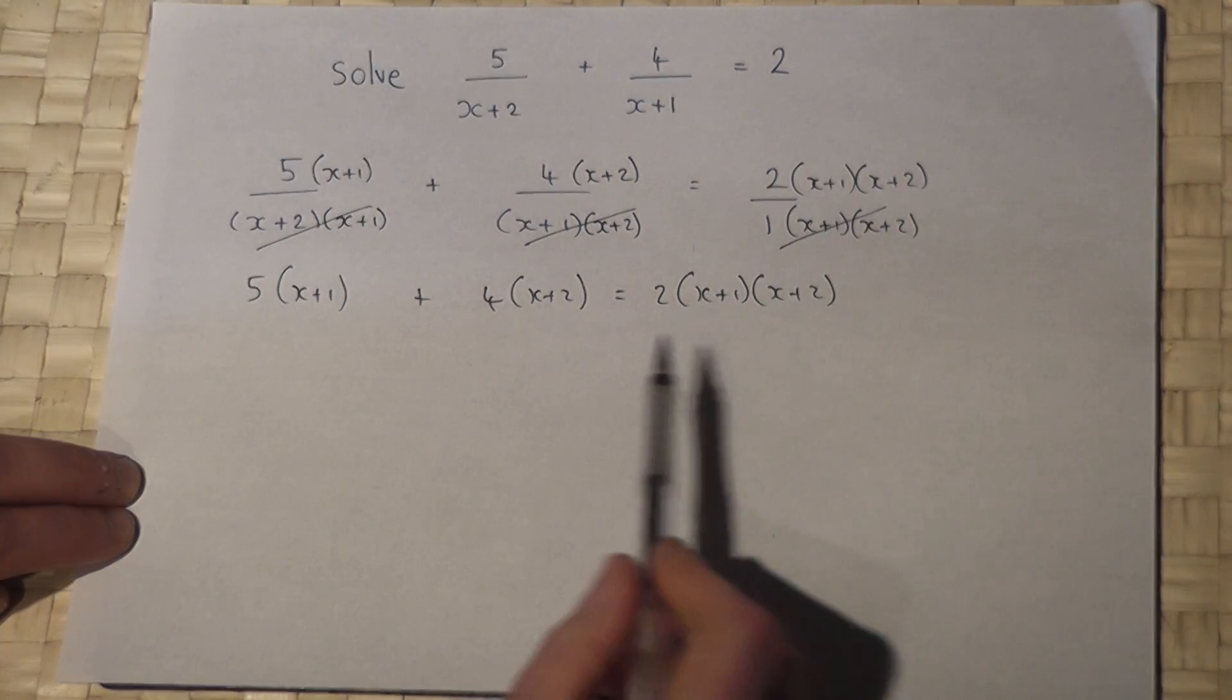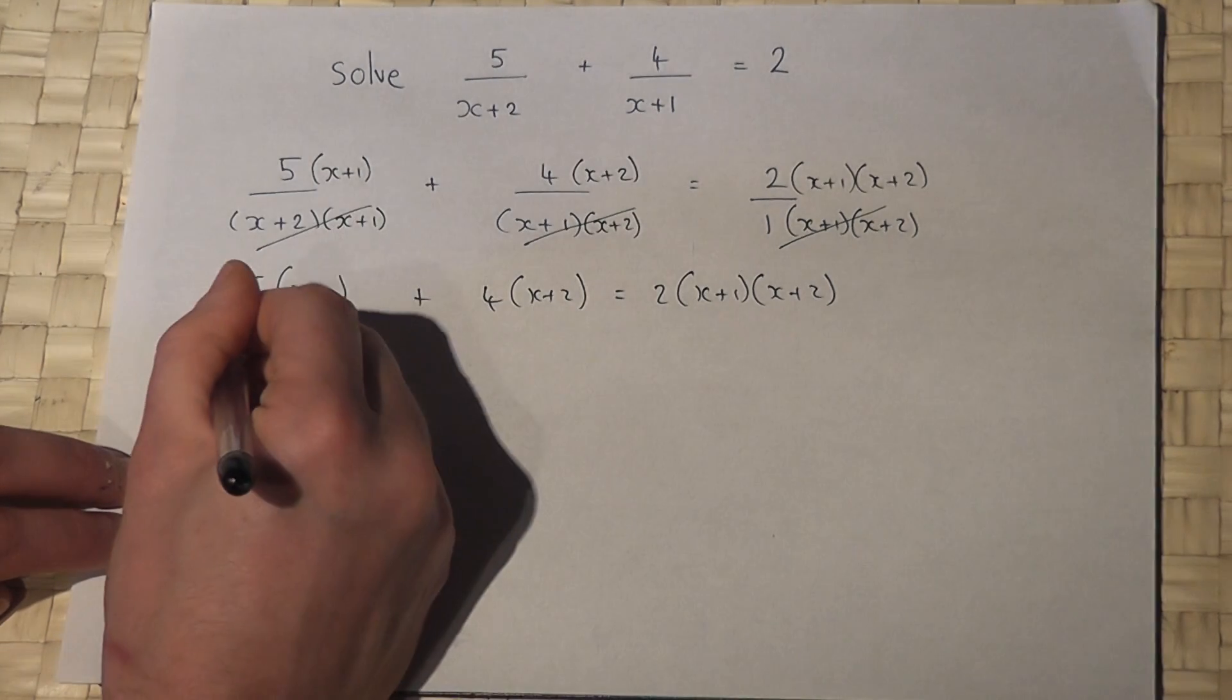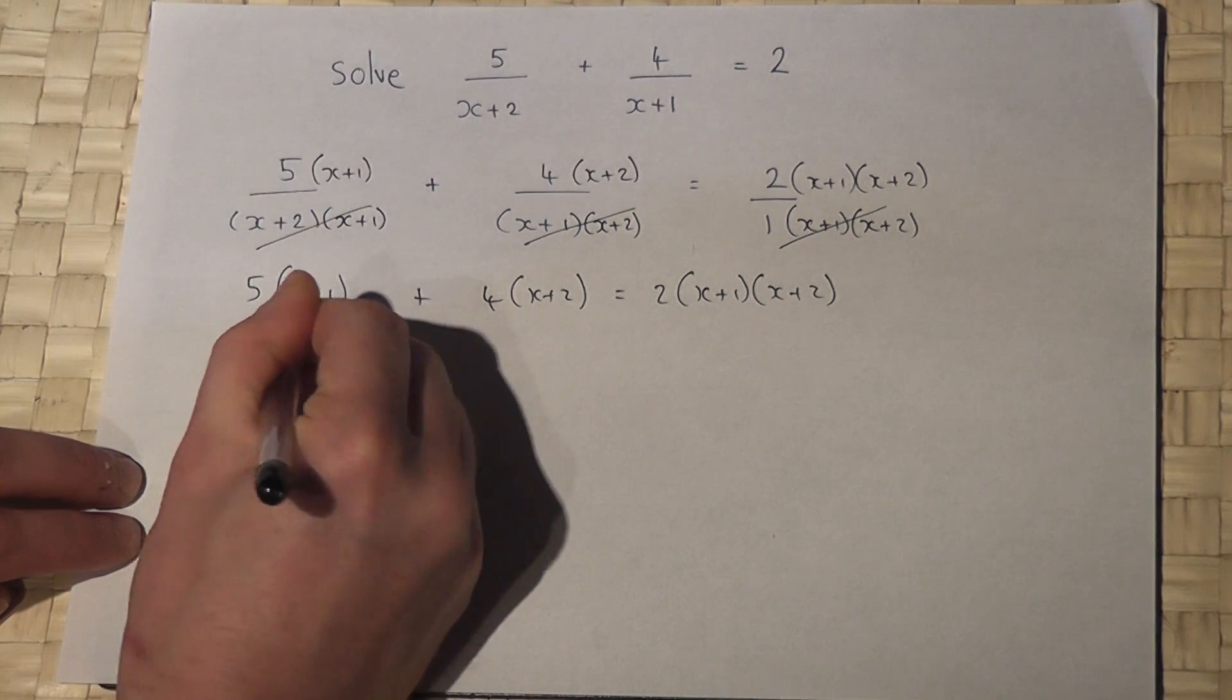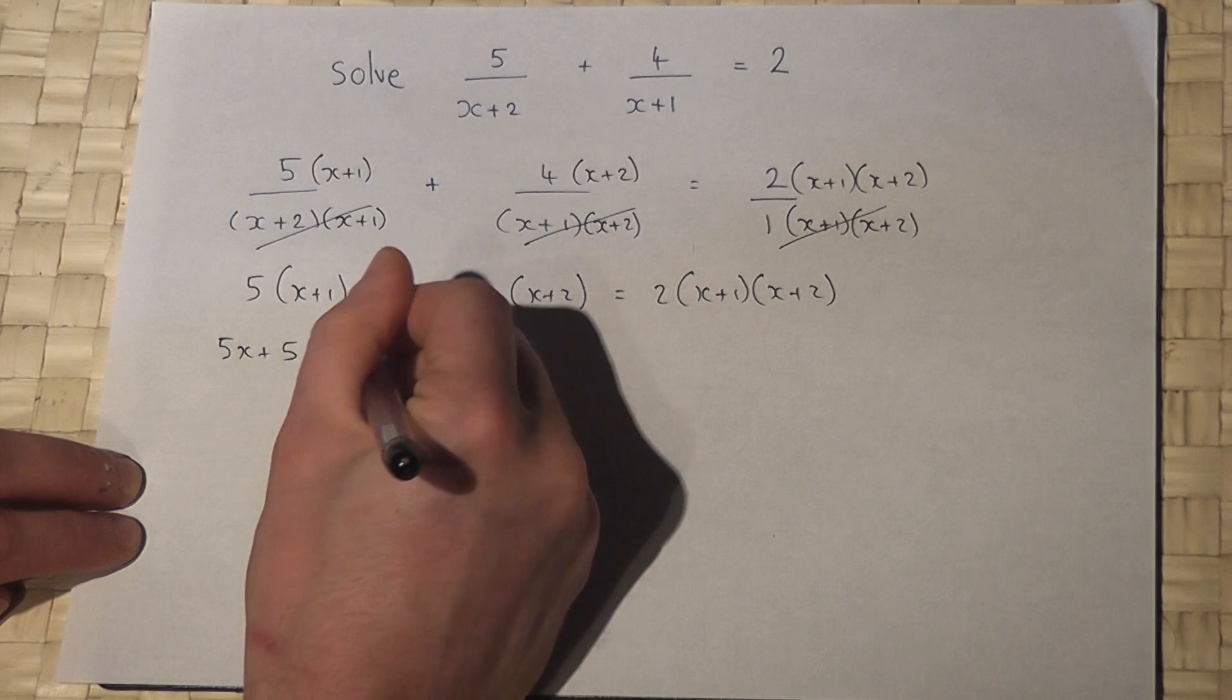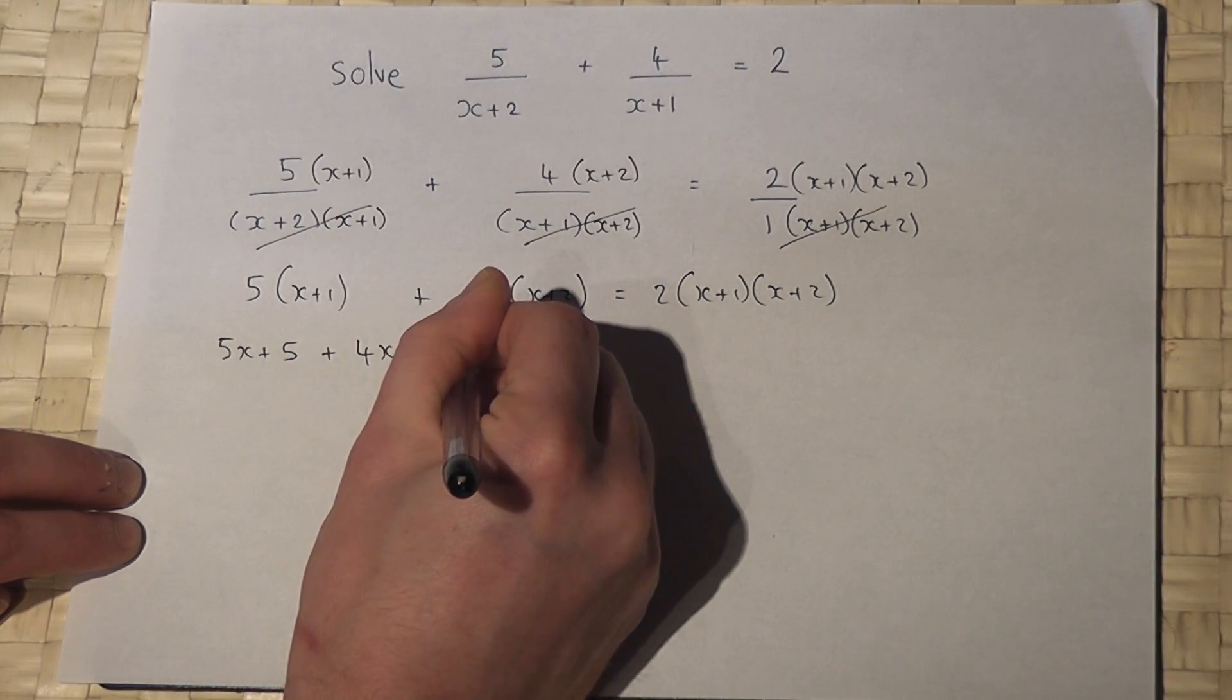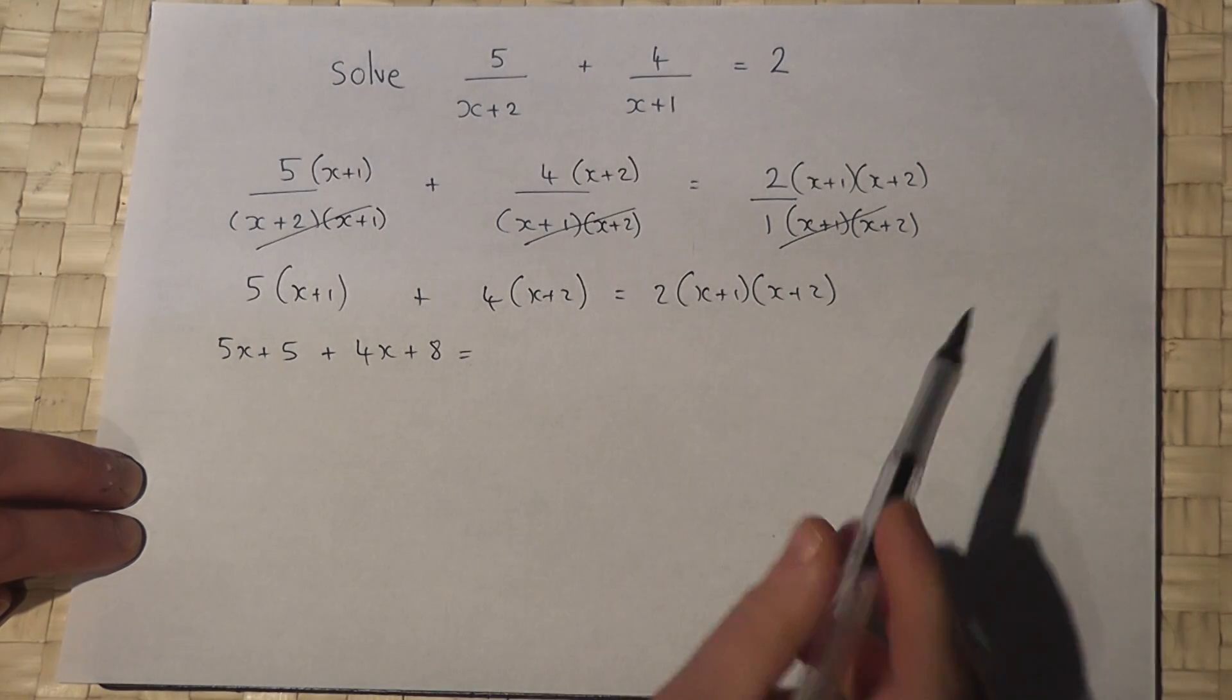Now to solve an equation like this, I need to expand the brackets. So 5x plus 5 from that bracket, plus 4x plus 8 equals... Now 2 bracket, x plus 1, x plus 2.